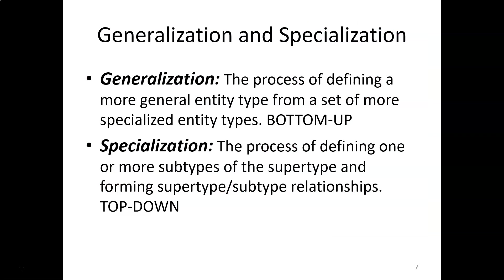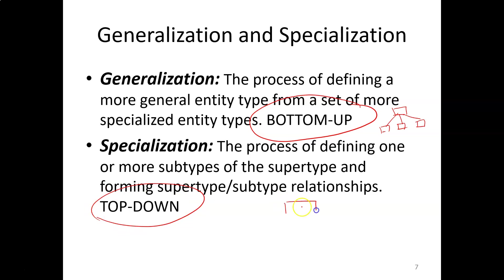There are two techniques for creating supertypes and subtypes. Generalization is a bottom-up technique — you define a more general entity type from a set of more specialized entity types. You start with a number of subtypes, realize there are common attributes among them, and create a supertype from those subtypes. Specialization is the opposite — a top-down process of defining one or more subtypes of a supertype. You start with a general entity type and realize some instances have unique attributes or relationships, so you break it into multiple subtypes.